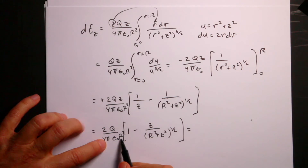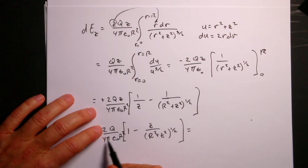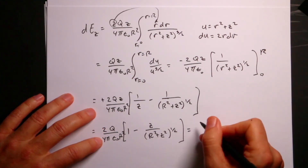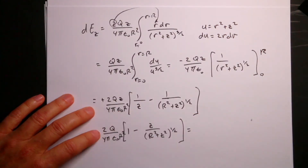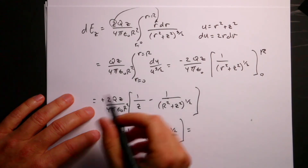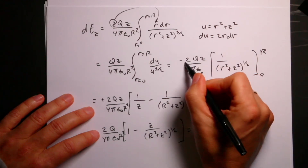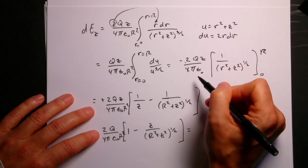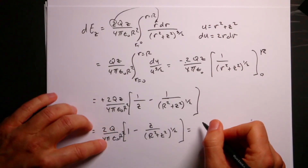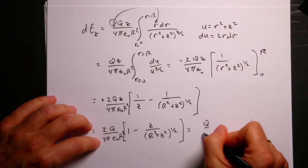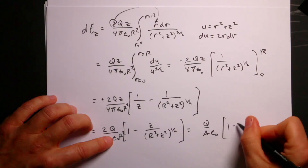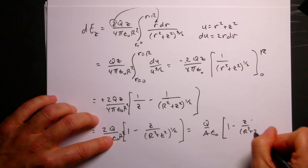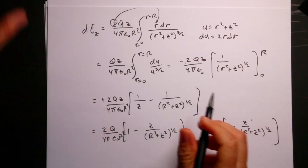Now I can write this with π R squared — that's the area of the circle. And I have two over four, giving one half. But wait, I had another two — two times π R squared. I'm off by a factor of two. I think there's a factor of two from the DQ expression. Let me check: this should be Q over π R squared — that's Q over area — times 1 minus Z over the square root of R squared plus Z squared.